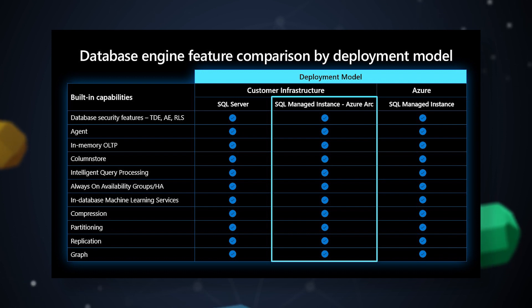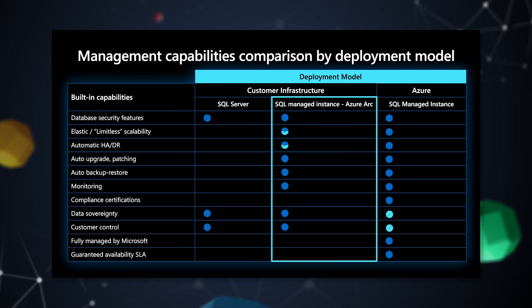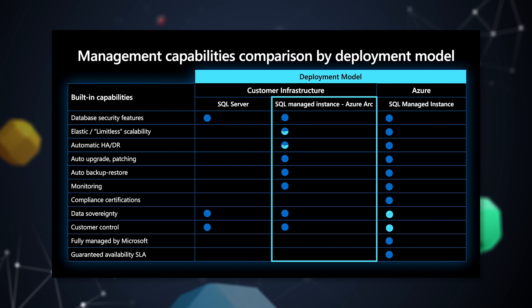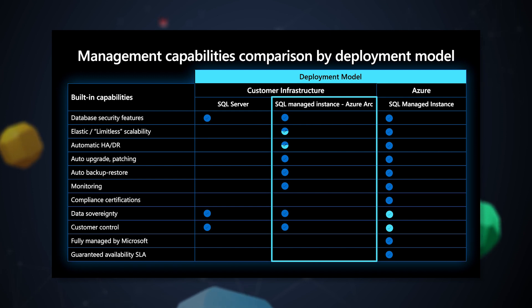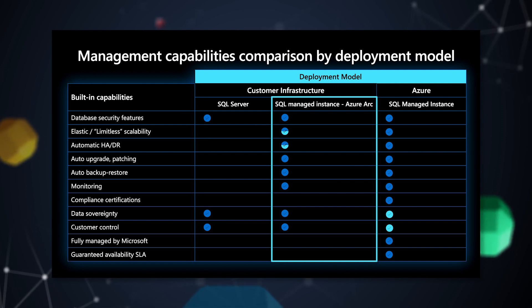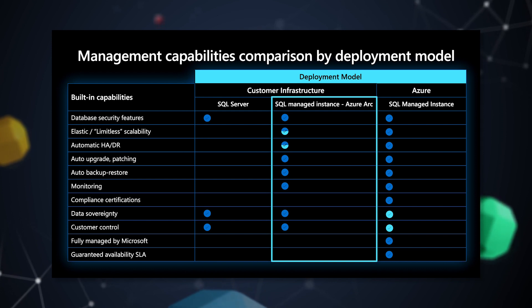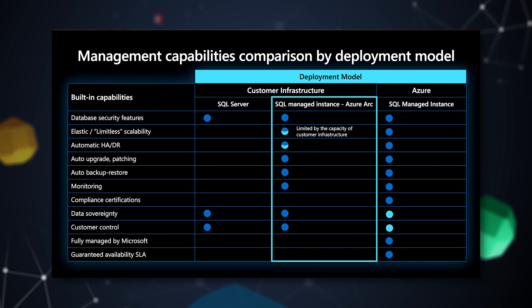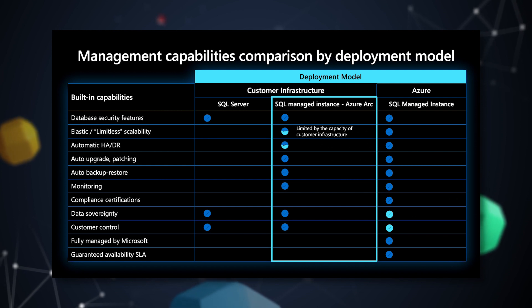There are some differences when we think about management capabilities. SQL Server has data security features built in, and security is so important we want to make sure that's available everywhere. But in terms of management capabilities, there are some differences. Running Azure SQL in Azure infrastructure gives you more or less limitless infrastructure capacity inside an Azure data center. With SQL Managed Instance in Azure Arc, capacity is necessarily limited by whatever infrastructure you are using — though it might be more or less unlimited if you're on AWS or Azure, it could be limited by the servers or racks available in your own data center.